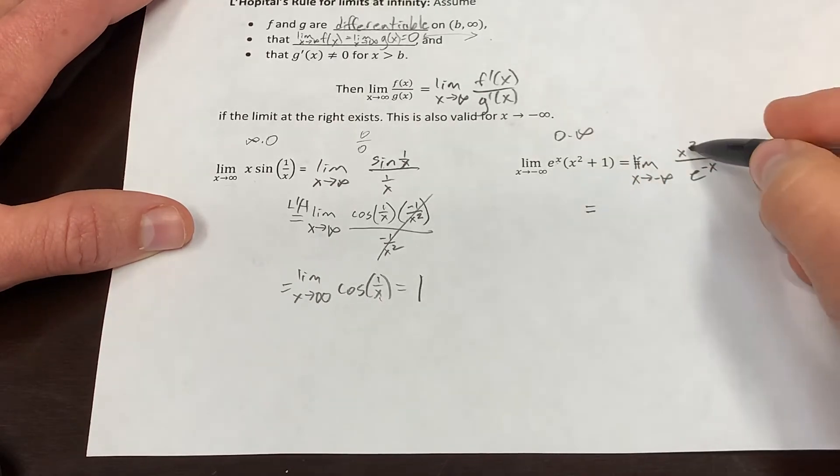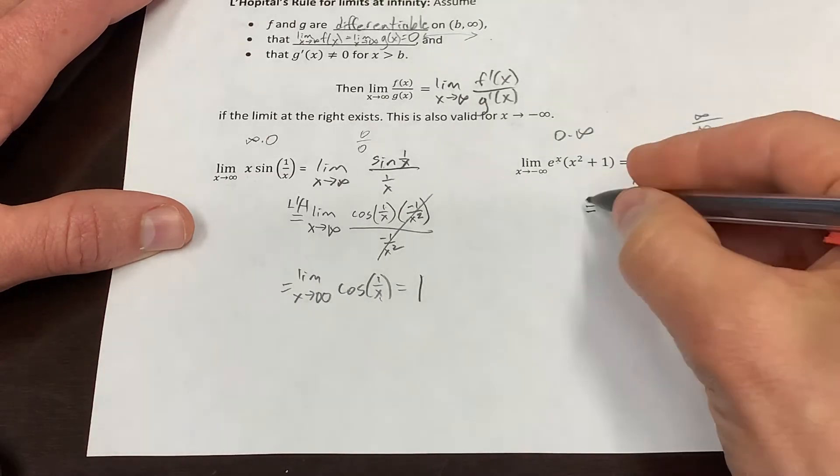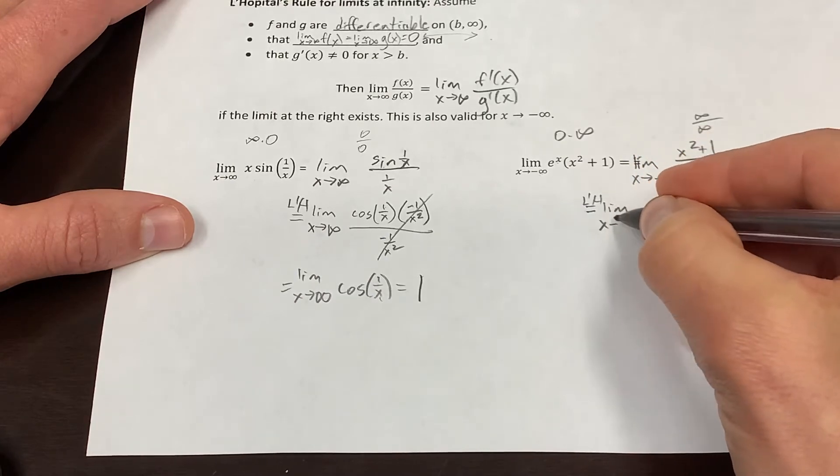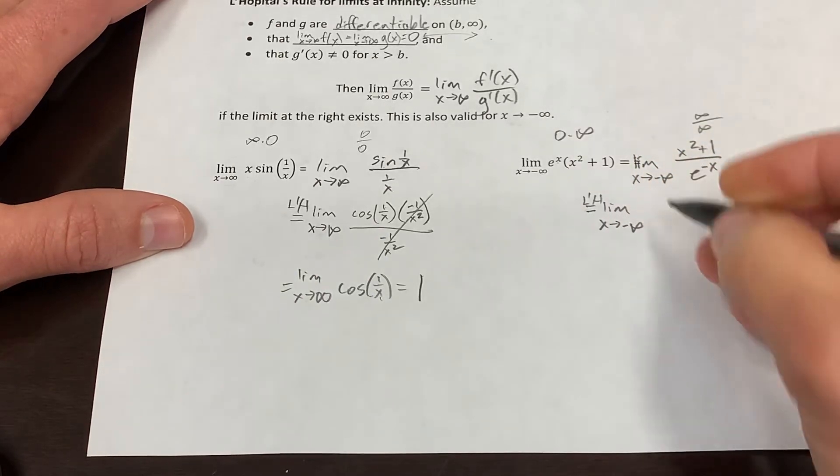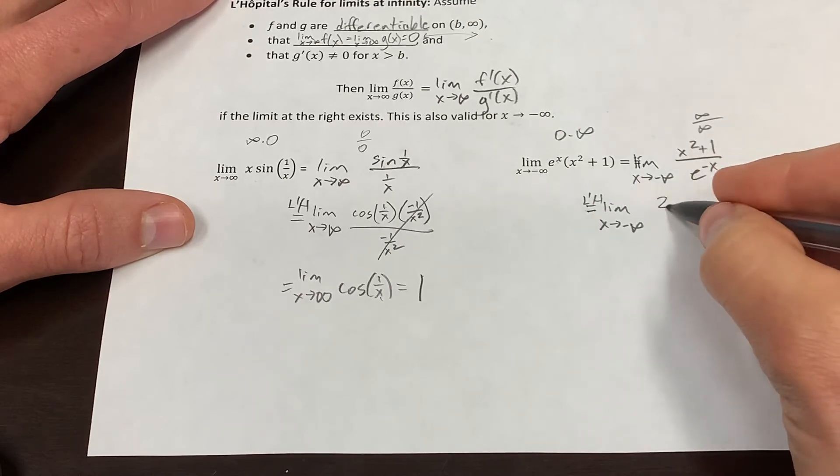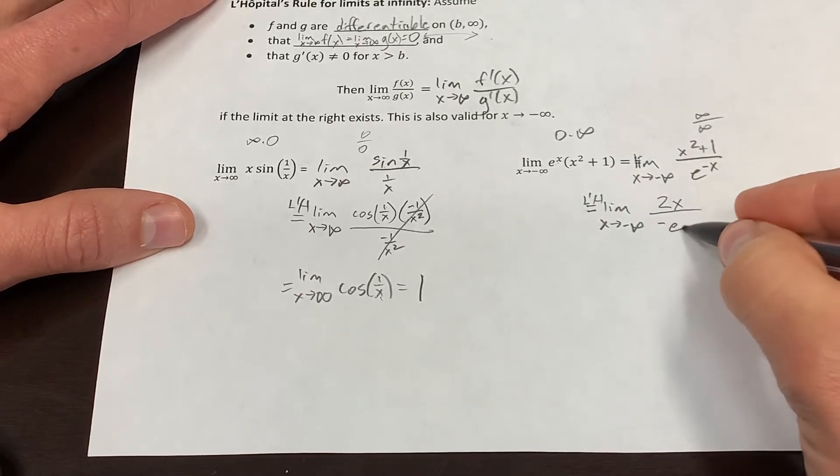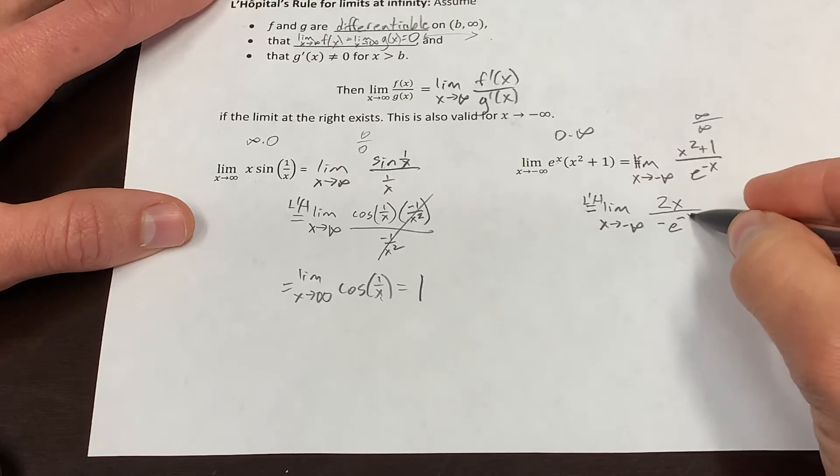So now I'm going to apply L'Hôpital's rule, by the way. That's now infinity over infinity. So the limit as x goes to negative infinity. The derivative of the numerator is 2x. The derivative of the denominator is negative e to the negative x.